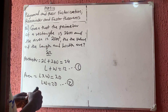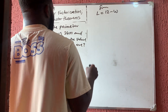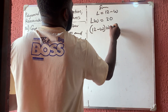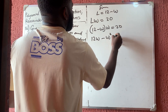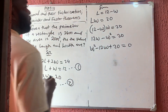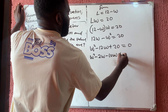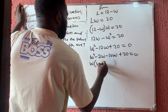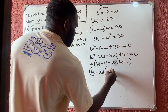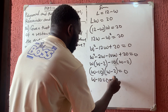From equation 1, l equals 12 minus w. Substituting into equation 2: (12 minus w) times w equals 20, giving 12w minus w squared equals 20. Moving everything to one side: w squared minus 12w plus 20 equals zero. Factoring: w squared minus 2w minus 10w plus 20 equals zero, giving (w minus 2)(w minus 10) equals zero.